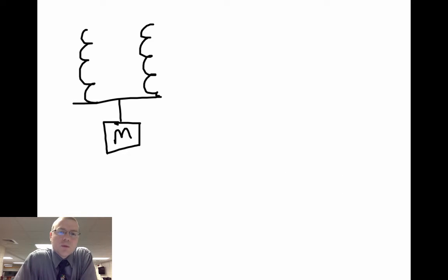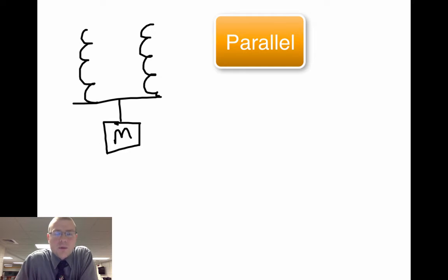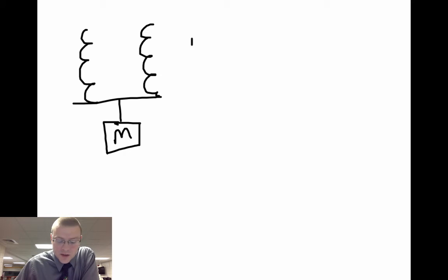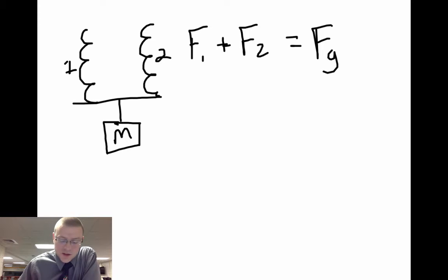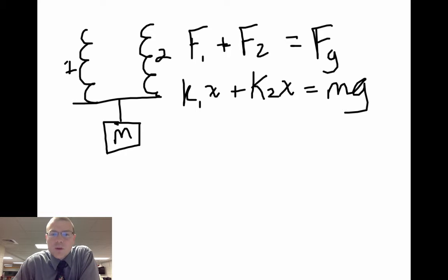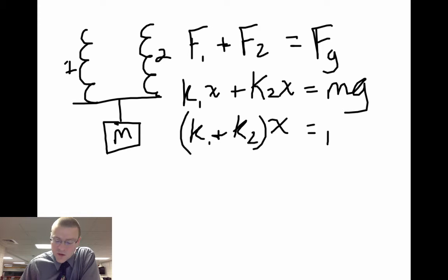The first thing we want to do is hook up springs that are right next to each other. We call this springs in parallel. When you think about springs in parallel, both of those springs are lifting and they're both taking some of that downward force up. So I can say that the force in the first spring, spring one, plus the force in the second spring must equal the weight of the block. So we can say that k1x plus k2x equals mg. One thing we do know is that spring one and spring two will stretch the same distance.